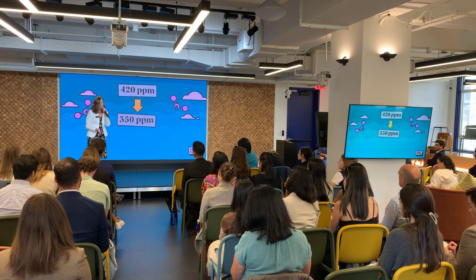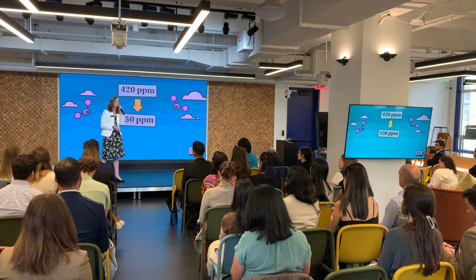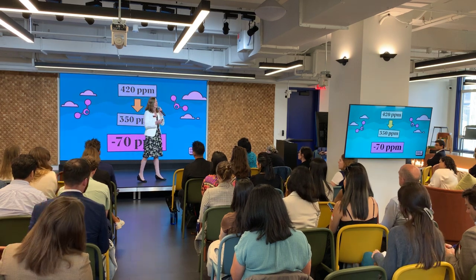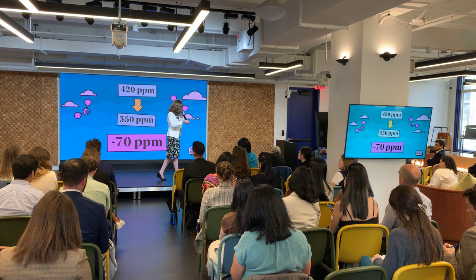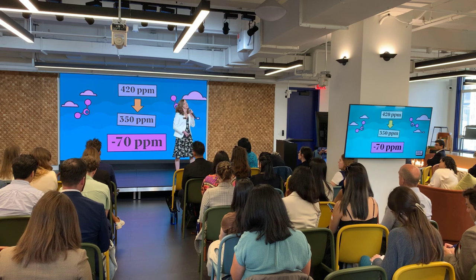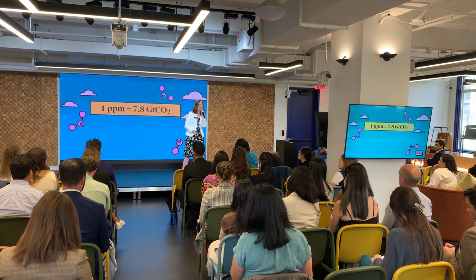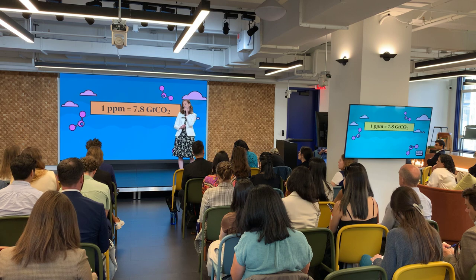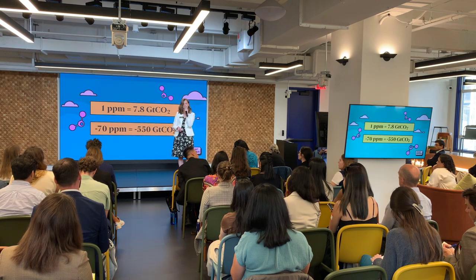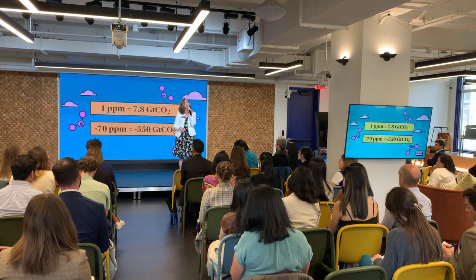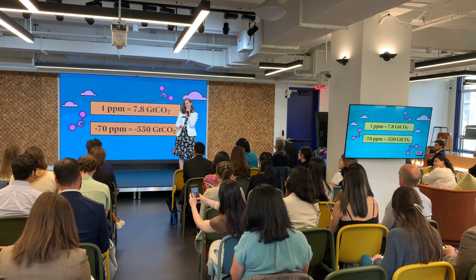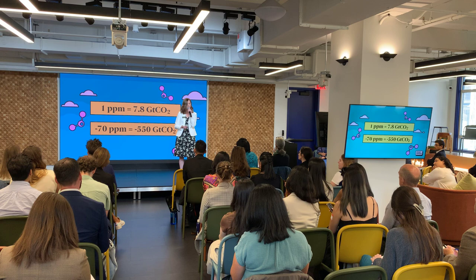Experts want us to get down to at least 350 ppm. That means we need to get down 70 ppm. And if you remember, 1 ppm equals 7.8 gigatons of carbon dioxide. So if we need to get down 70 ppm, that means we need to remove at least 550 gigatons of CO2.